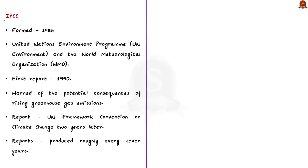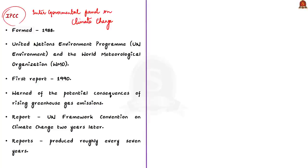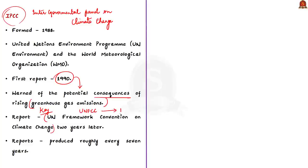The IPCC is the body that was first formed in 1988 by the United Nations Environment Programme and the World Meteorological Organization. Its first report was released in 1990 and it warned of the potential consequences of rising greenhouse gas emissions. This report later proved to be the key to forging the UN Framework Convention on Climate Change two years later, which is the parent treaty to the 2015 Paris Agreement.